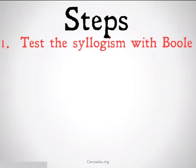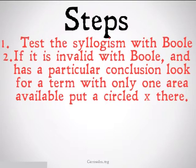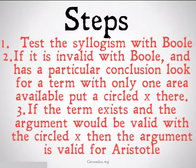Remember, our steps are: first, we are going to test our syllogism with Boole, and if it's invalid with Boole and it has a particular conclusion, we'll look for a term with only one area available. We'll put a circled X there. If that term exists and the argument would be valid with the circled X there, then the argument is going to be valid for Aristotelian.